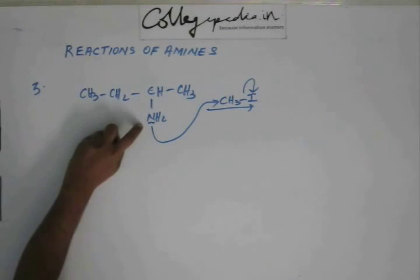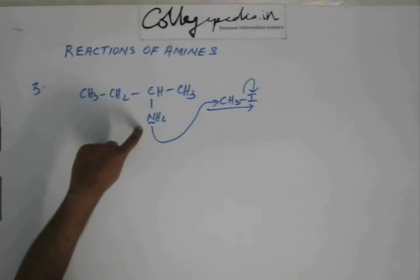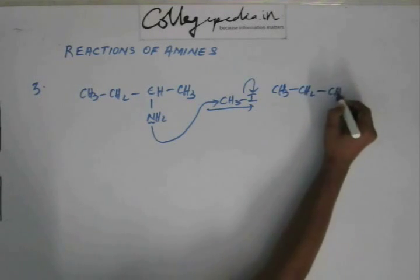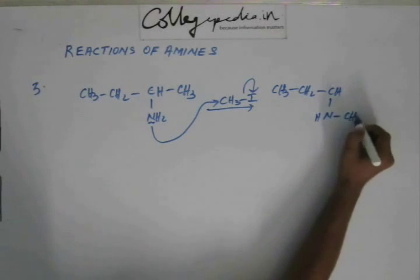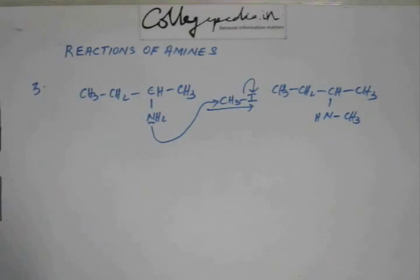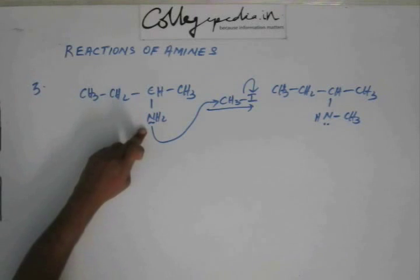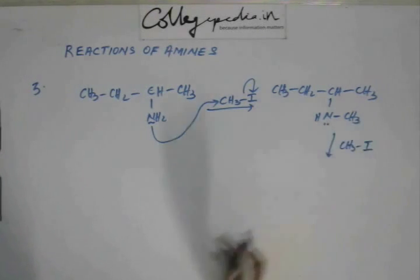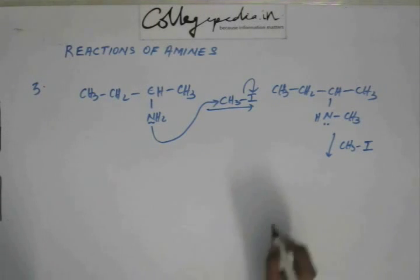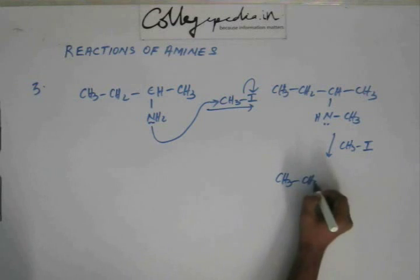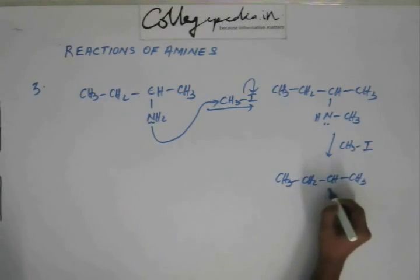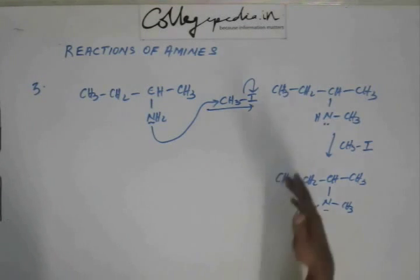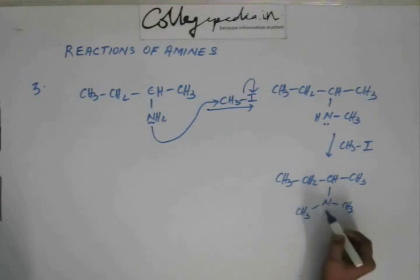Nitrogen will generate a plus charge on itself. We can get rid of that plus charge if H+ is removed. So after removing H+ from nitrogen, this is what we will have. Now nitrogen again has a lone pair, and this lone pair can be utilized to go for further reaction. If we have more methyl iodide present in the system, there can be further reaction and the whole process will repeat one more time. Nitrogen still has a lone pair because when you remove H+, that lone pair is there again, unutilized.